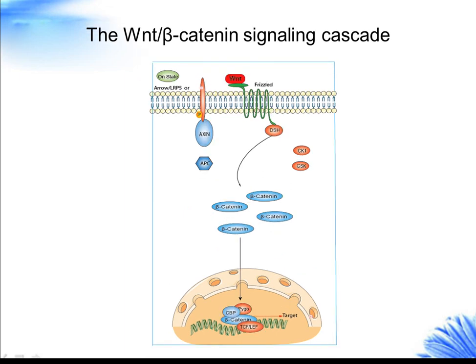When cells receive WNT signals, the degradation pathway is inhibited, and consequently beta-catenin accumulates in the cytoplasm and nucleus. Nuclear beta-catenin interacts with transcription factors such as lymphoid enhancer binding factor 1/T-cell specific transcription factor, LEF/TCF, to affect transcription. A large number of WNT targets have been identified that include members of the WNT signal transduction pathway itself, which provide feedback control during WNT signaling.